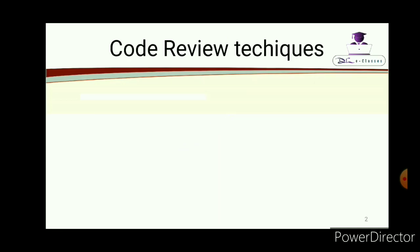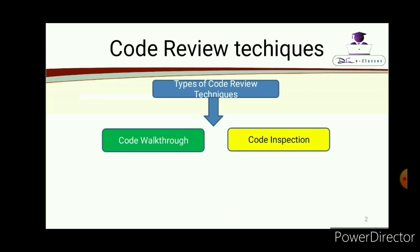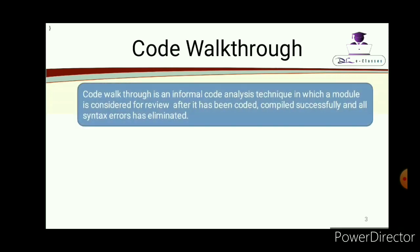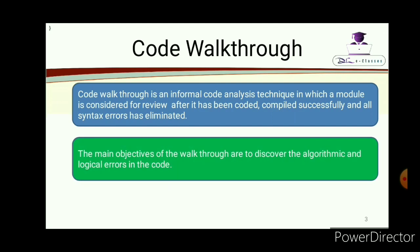There are different types and different scopes of code review techniques, but overall they can be classified into two types. The first is known as code walkthrough and the second technique is known as code inspection. Code walkthrough is an informal code analysis technique in which a module is considered for review after it has been coded, compiled successfully, and all syntax errors have been eliminated.